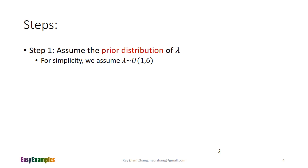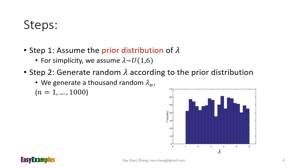Now we get to the detailed steps. In step one, we assume the prior distribution. For simplicity, we assume that lambda is uniformly distributed from 1 to 6, because we guessed that lambda is some value between 1 and 6. In step two, we generate 1000 random lambdas according to the prior distribution assumed in step one. We use lambda_n to denote the nth generated lambda. The histogram here shows the distribution of the 1000 lambdas, and we can see that it is uniformly distributed from 1 to 6.